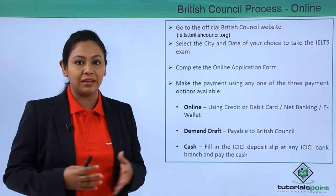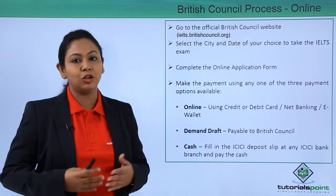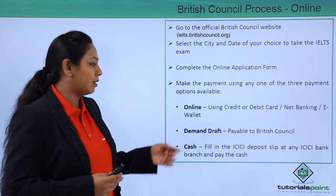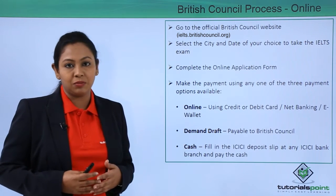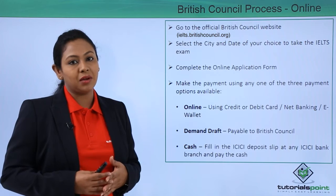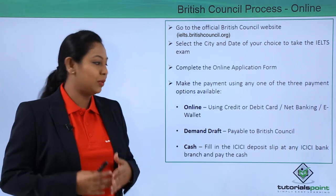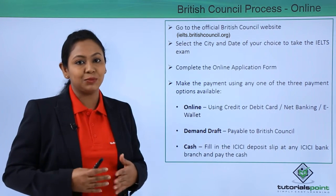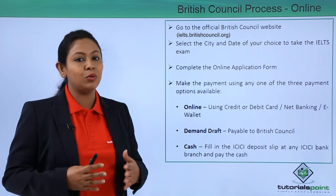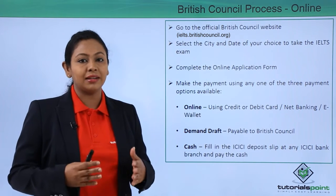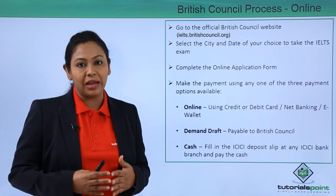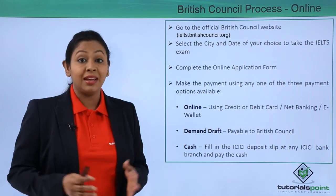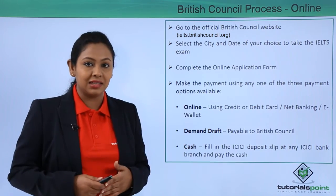You have three options for payment when registering online. One is online payment where you can use net banking, credit or debit card, or an e-wallet. The second is the demand draft method, where you make a demand draft payable to the British Council. Third is the cash method, where you deposit cash at an ICICI Bank branch using the cash deposit slip and collect the receipt.